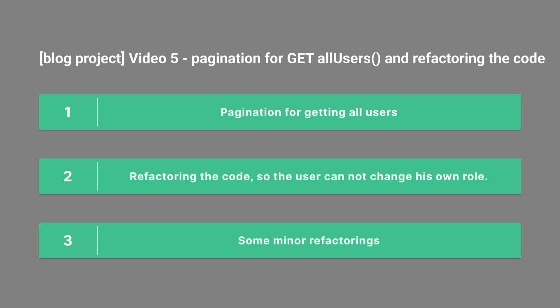So why are we doing this? Because if you get an endpoint and you want to have all users, we don't want to display — for example if there are 10,000 users in the database — a table with 10,000 entries. No one will scroll to the bottom; it's not practicable, or you can't even render it in the browser. So you want an endpoint where you get, for example, 10 users on the first page, and then you can say with query parameters you want the second page and another 10 users, so you can paginate between pages like you will do in the UI in Angular later.